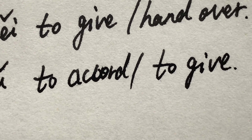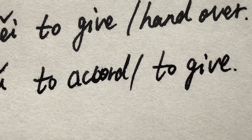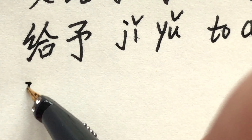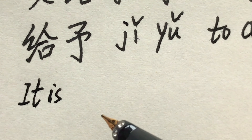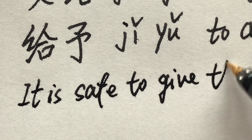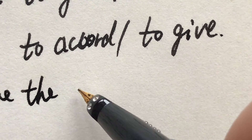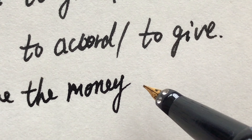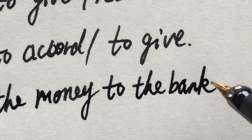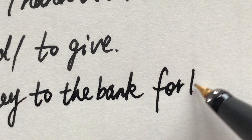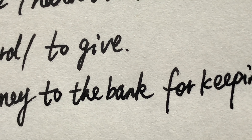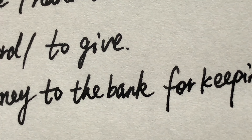Now check this sentence: 把钱交给银行保管，是安全的 (Bǎ qián jiāo gěi yínháng bǎoguǎn, shì ānquán de). It means: 'It's safe to give the money to the bank for keeping.'